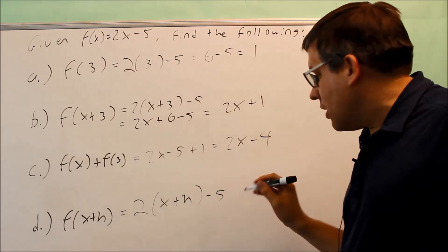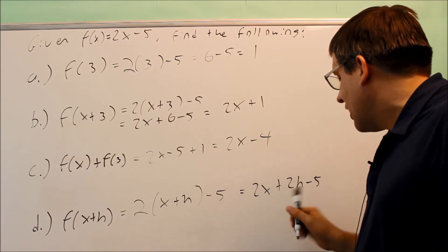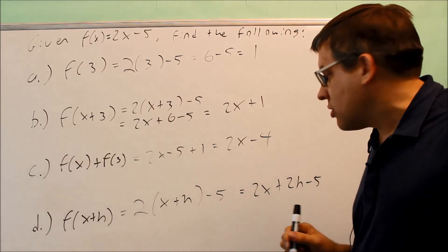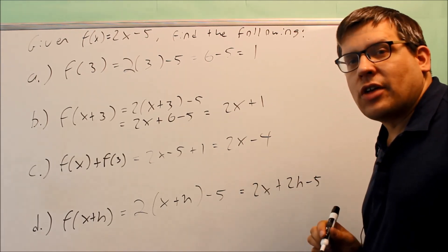Once again, you're going to do a simplifying step. 2x + 2h - 5. That's as far as you can go with your answer because, again, we don't know x and we don't know h. So that's as far as you can go. You'll leave your answer as that.